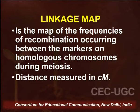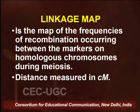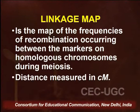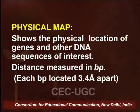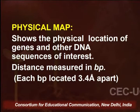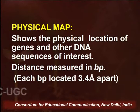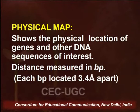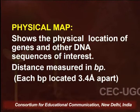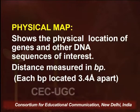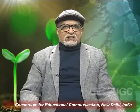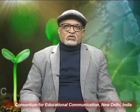The linkage map is a map of the frequencies of recombination occurring between markers on homologous chromosomes during meiosis. But is this map absolute? If we just measure distance in centimorgans, we find there could be various other aspects — not merely a genetical map. We also have to talk about the physical location. There is something called a physical map, which shows the actual physical location of genes and other DNA sequences of interest.